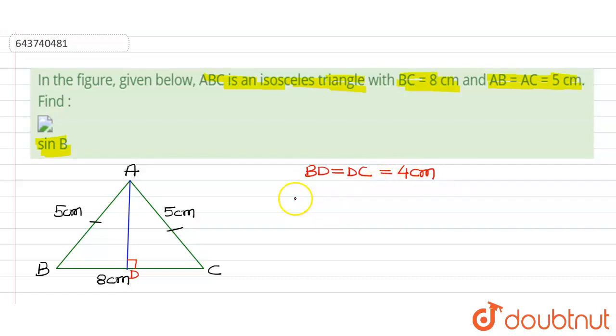Now we will find the value of AD. In triangle ABD, AB square equals AD square plus BD square.